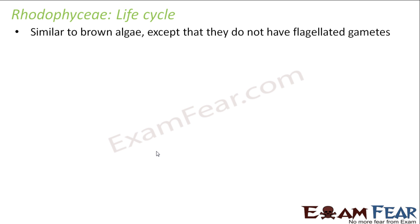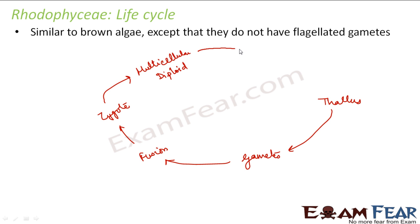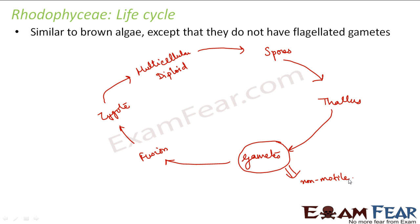The life cycle of Rhodophyceae is very similar to that of brown algae. The thallus gives rise to gametes, which fuse to form a zygote. The zygote forms a multicellular diploid phase, which undergoes meiosis to form spores, and the spores germinate to form the thallus again. The only difference is that in red algae the gametes are non-flagellated, meaning they are non-motile and cannot move.